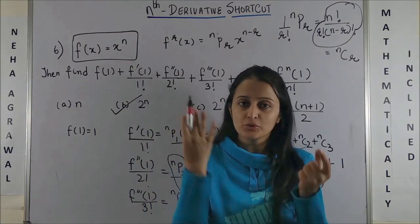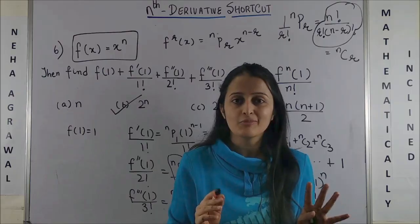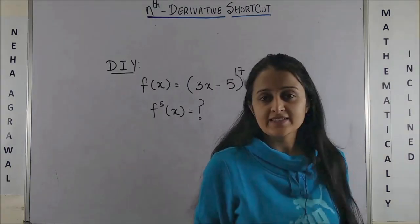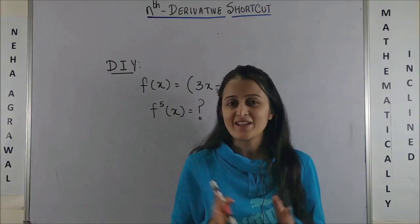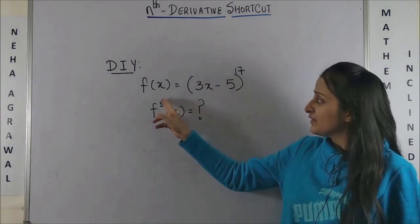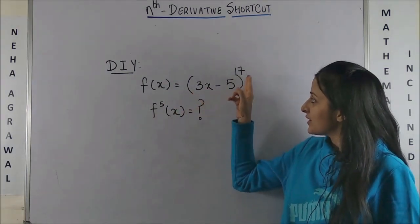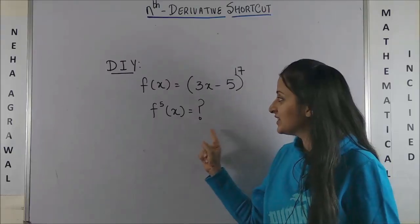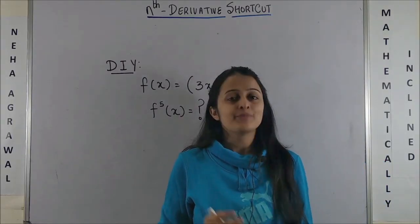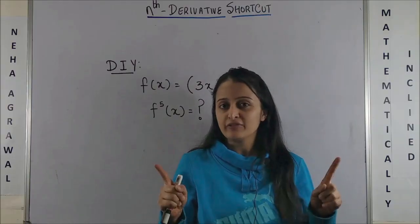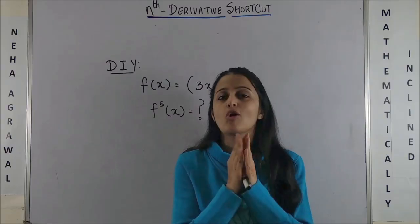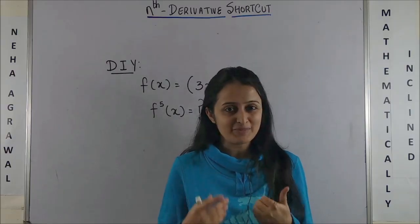Have a look, it's time for your DIY - yes, do it yourself question. And now it is very simple and sweet. If your f(x) = (3x - 5) whole raised to power 17, then find the fifth derivative of x. So comment accurate and fast, because you know the top three accurate answers always get named in my upcoming videos.